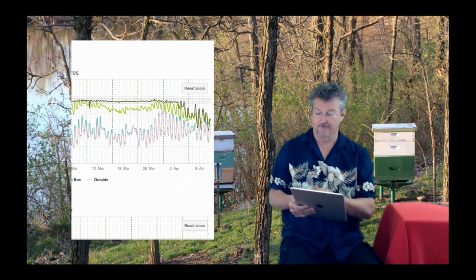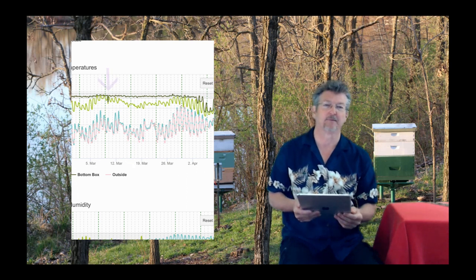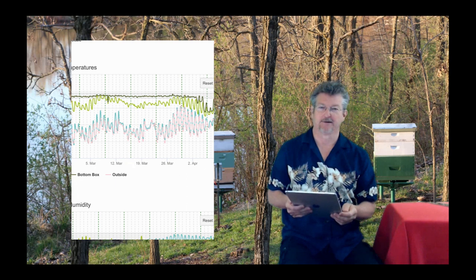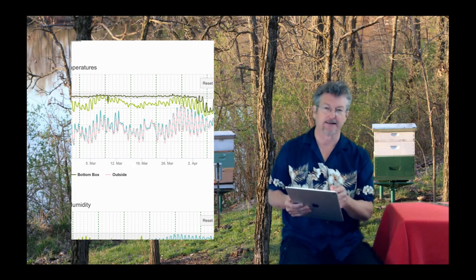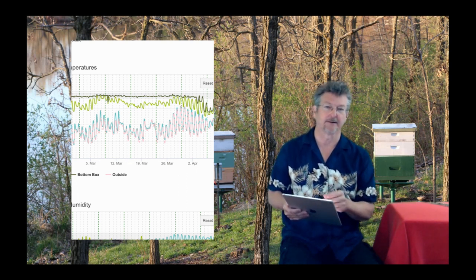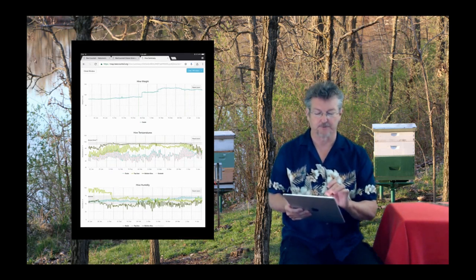We see back here in early March, a blip in the temperature. What he did then was a hive split. He took the bees out and took the queen to another hive. Then lo and behold, three weeks later, 21 days after all the brood had emerged, they quit regulating the hive temperature.